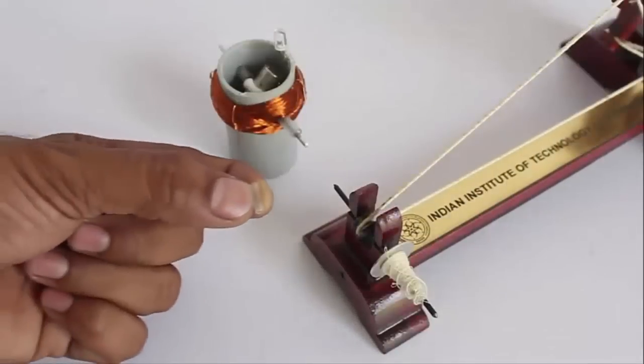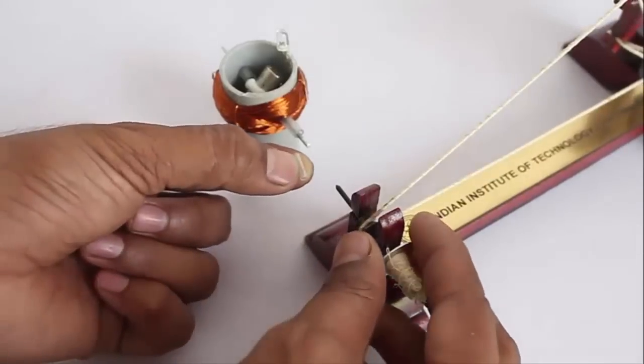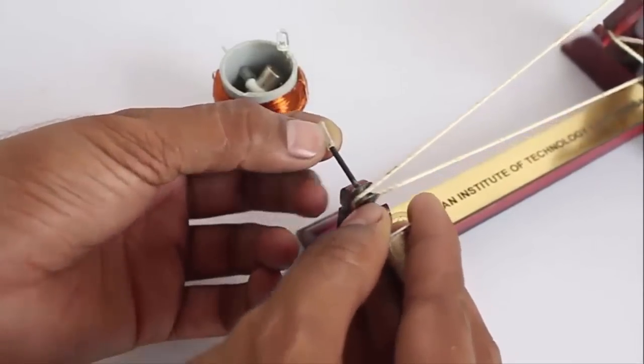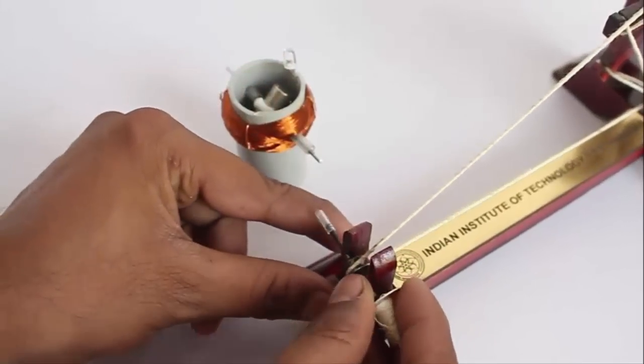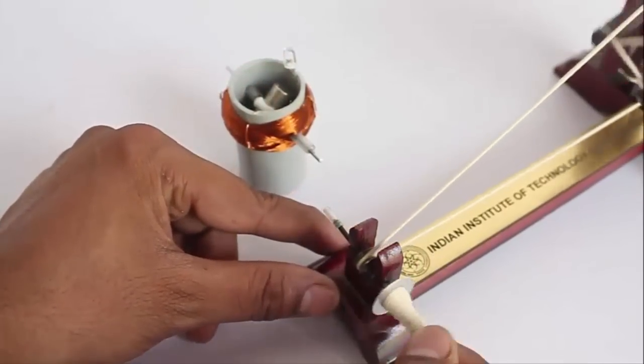Now, you attach the axle of the generator to the spindle of the wheel with the help of a ball pen refill. That's the coupling.